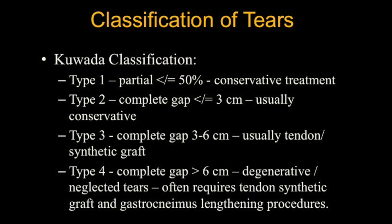The Kuwada classification classifies the tears. Type 1 is a partial tear with less than or equal to 50% of the tendon involved, and conservative treatment is usually tried. Type 2 is when the gap is less than or equal to 3 centimeters, also usually conservatively treated. Type 3 is where the gap is 3 to 6 centimeters and usually requires a tendon or synthetic graft. Type 4 is where the gap is more than 6 centimeters with degenerated or neglected tendon, requiring tendon or synthetic grafts, and gastrocnemius lengthening procedures may also be required.